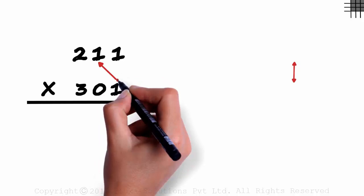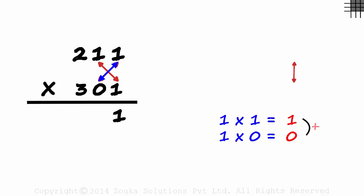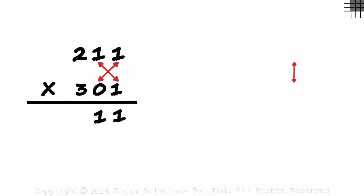Next, we find the sum of this product and this one. One multiplied by one is one, and one multiplied by zero is zero. One plus zero is one. We take this cross to the right as well, just so that we remember what we did.